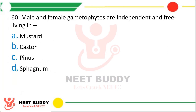Question number 60. Male and female gametophytes are independent and free-living in: mustard, castor, Pinus, or Sphagnum? The correct answer is option D — Sphagnum.